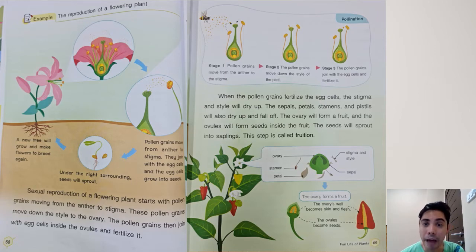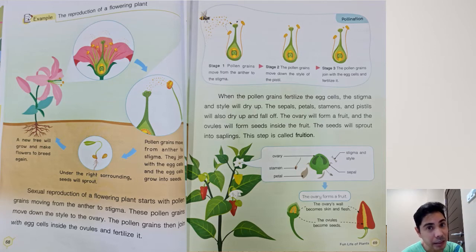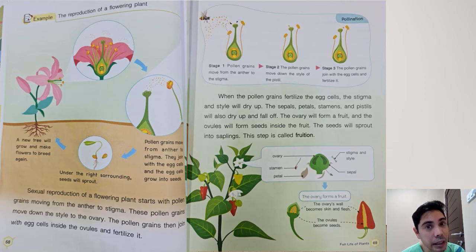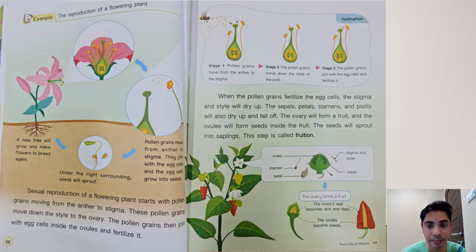That fruit will have a seed inside, just like the mango. Remember, when the flower becomes a mango, it becomes a fruit and we eat the mango, and inside the mango there is a seed. That seed we plant again and it will make another plant. If you are still confused, let us watch this short video that teacher borrowed from the internet — a cartoon to learn how flowers are made.